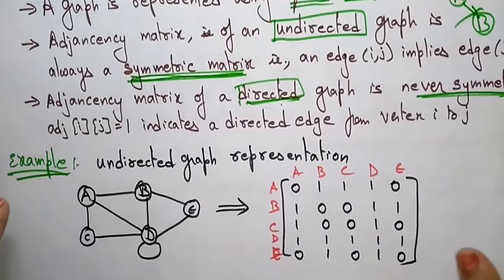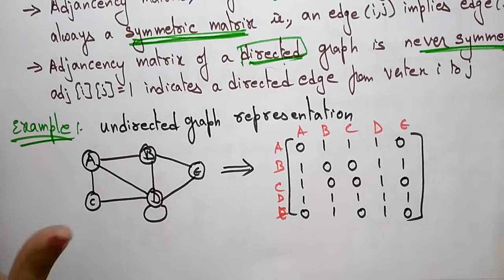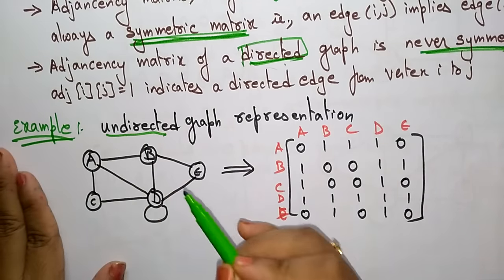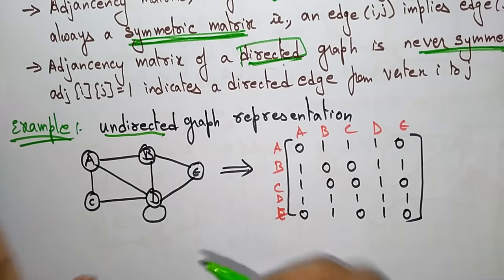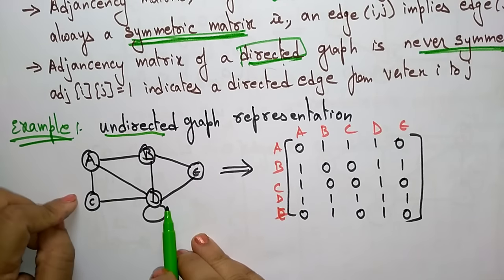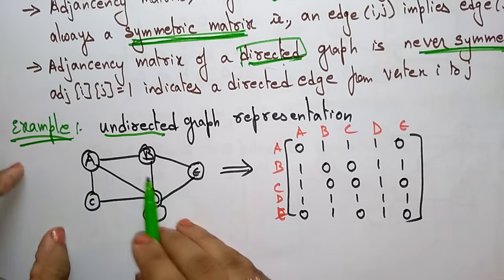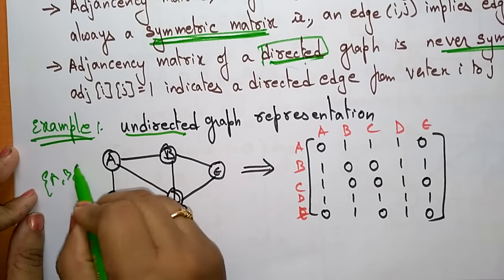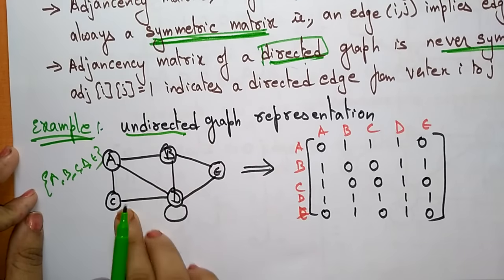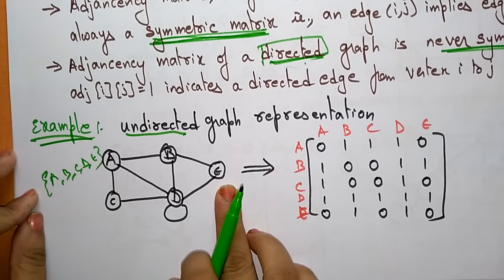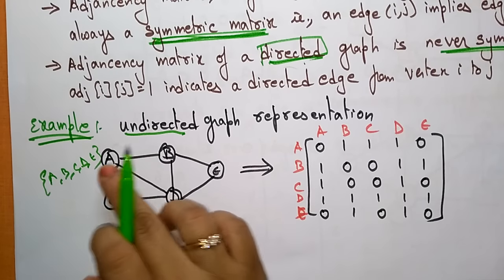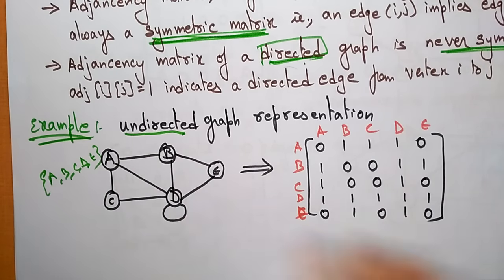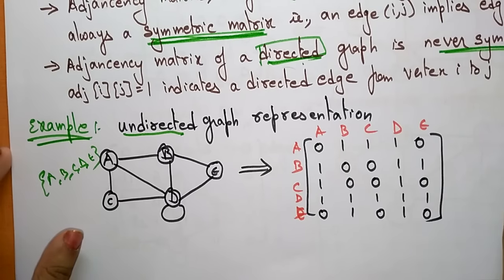Let me explain with an example. I am going to explain the adjacency matrix for undirected, directed, and weighted graphs. Here the set of vertices are a, b, c, d, e - total 5 vertices - and there are 7 edges. I have represented this in a square matrix, where rows and columns are arranged by vertex.